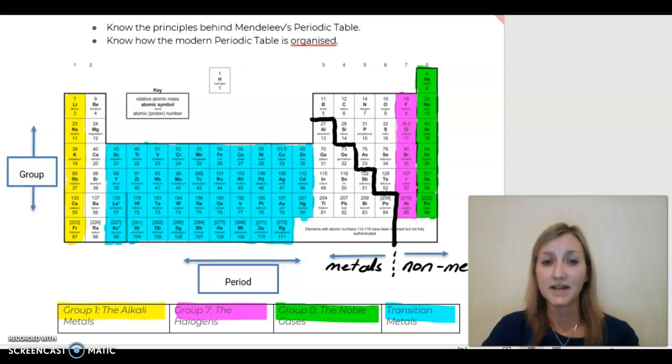And the final part of the task today was to add in the labels Group and Period. It is really important that we remember that Periods are across the Periodic Table and Groups are vertically up and down the Periodic Table.